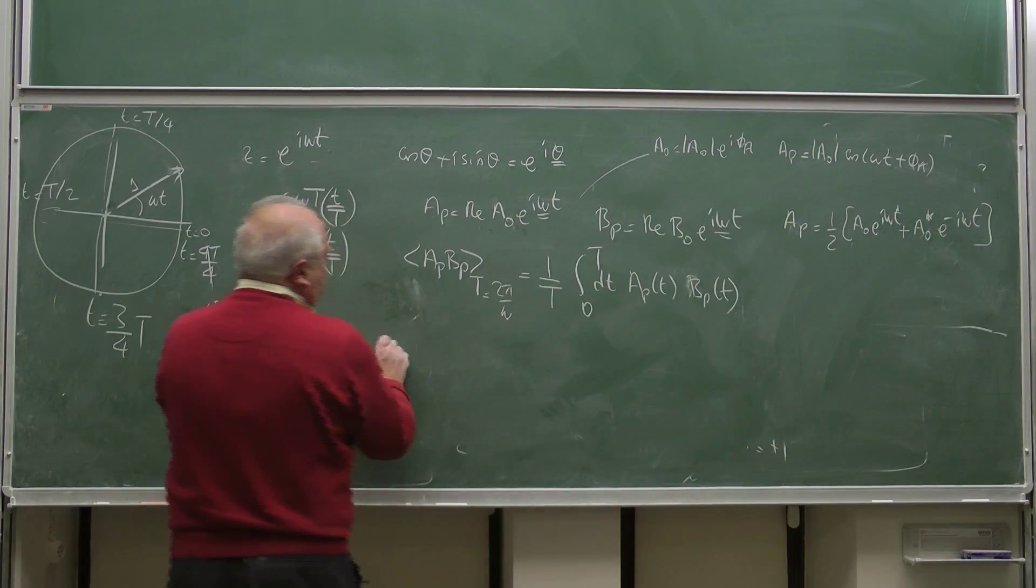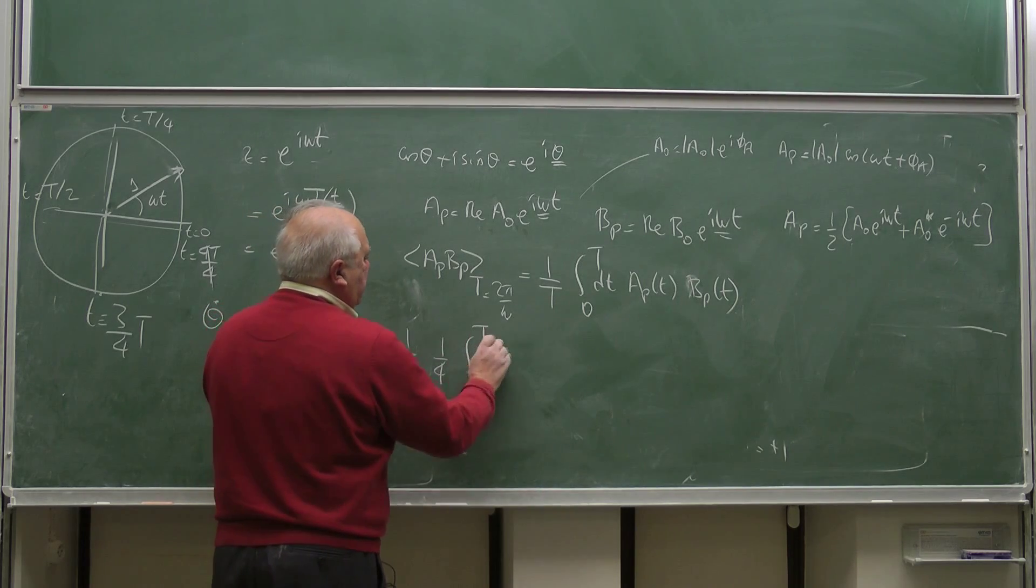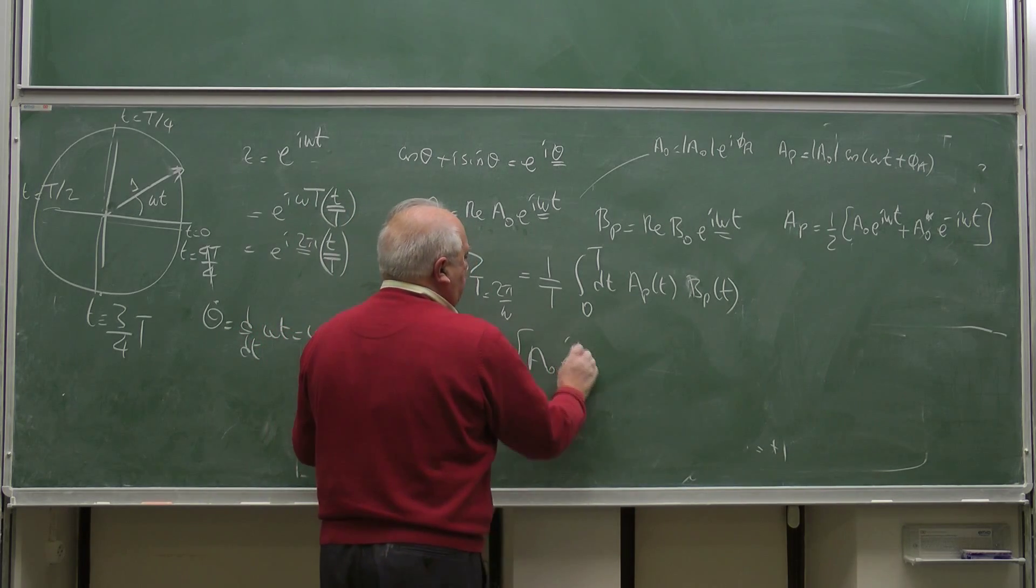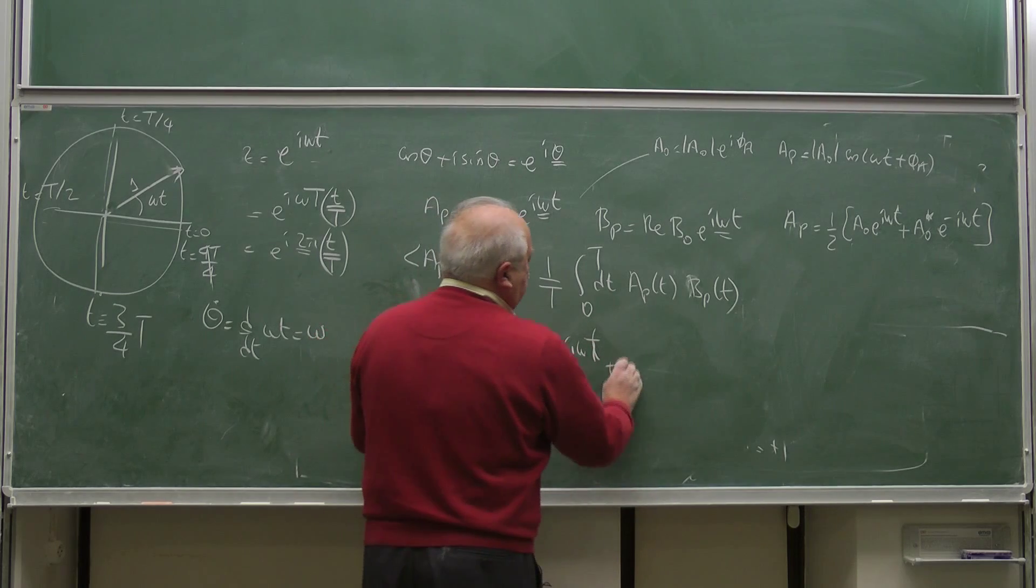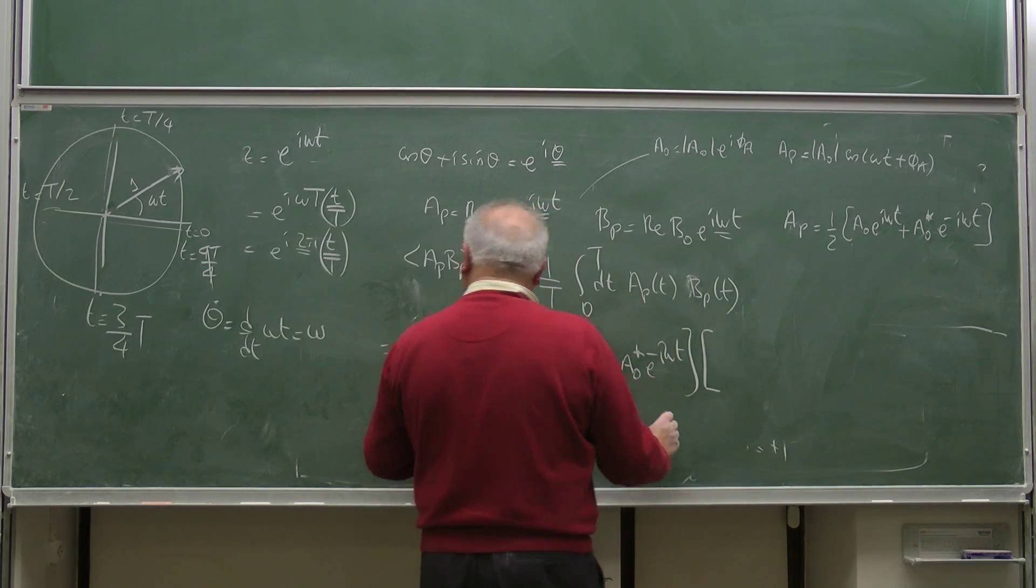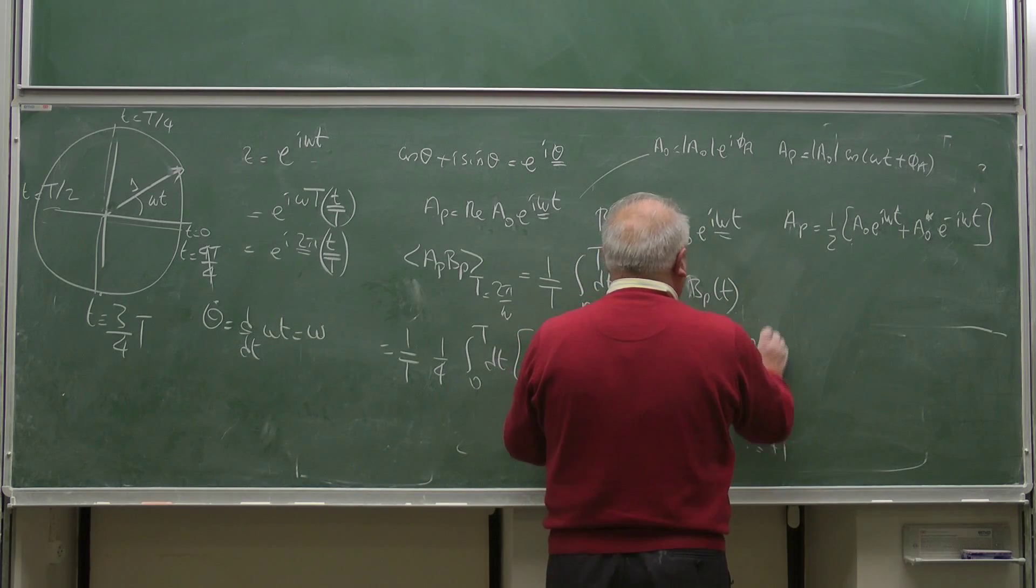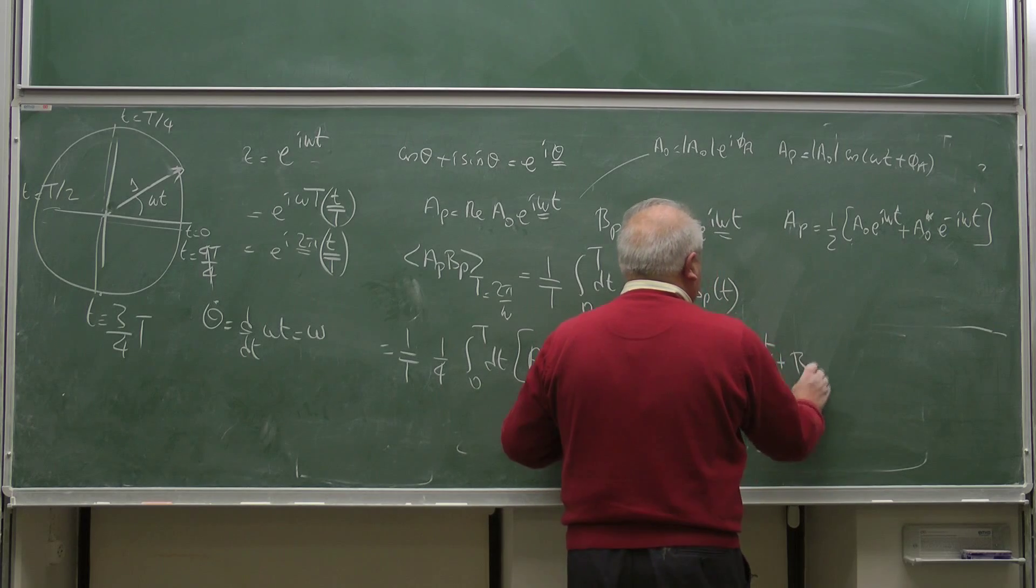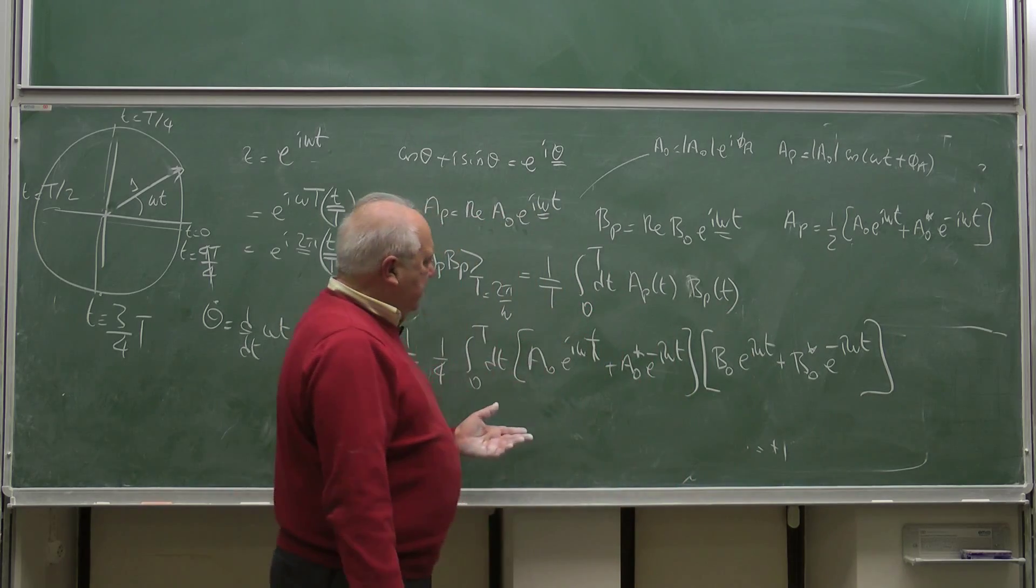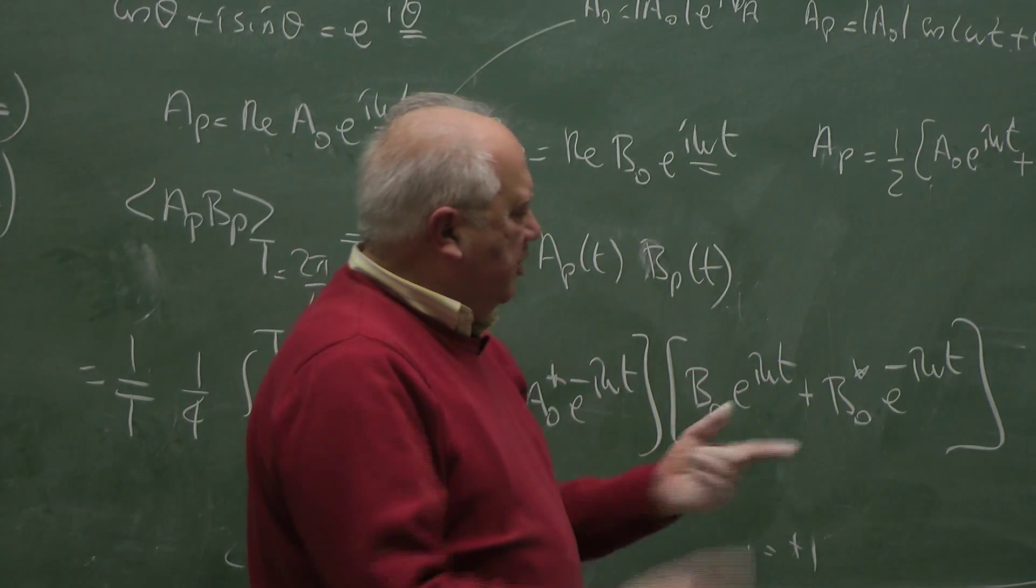So 1 over T, then we have 1 over 4, integral 0 to T dt. Now I will write it out: a0 e to the i omega t plus a0 star e to the minus i omega t, times the same thing with b. I already put 1 over 2 of the b: b0 e to the i omega t plus b0 star e to the minus i omega t.